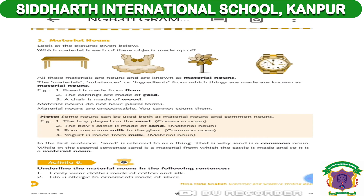Examples of material nouns include: gold, silver, diamond, wood — all materials. Material nouns do not have a plural form; they can only be singular. Material nouns are uncountable — you cannot count them.